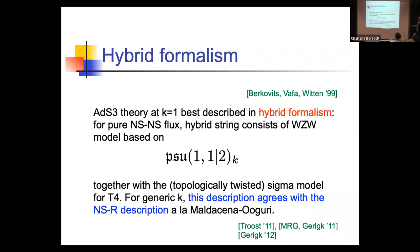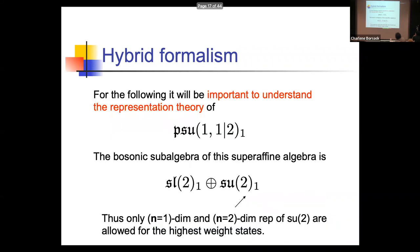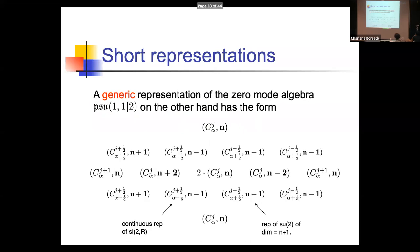This theory makes perfect sense at level one — remarkable things happen there. What is special about level one is that the bosonic sub-algebra — SL(2) at level one and SU(2) at level one — constrains the representations heavily. For SU(2) at level one, only two representations are possible as ground states: the trivial representation and the spin-doublet representation. As a consequence, you should look at representations of PSU(1,1|2) where only the one-dimensional and two-dimensional representations of SU(2) occur.